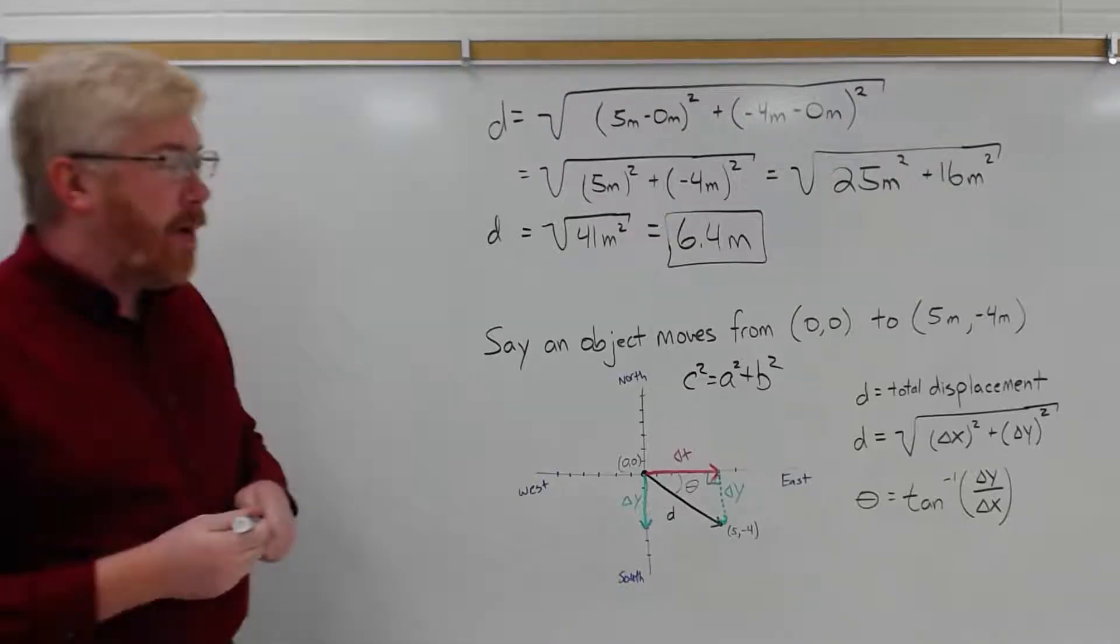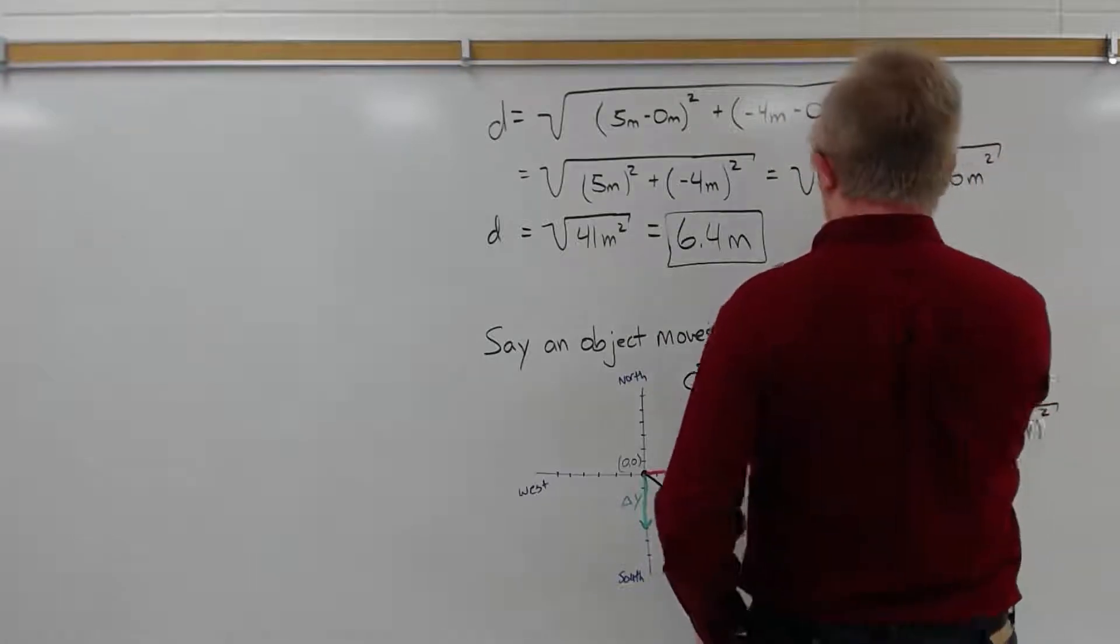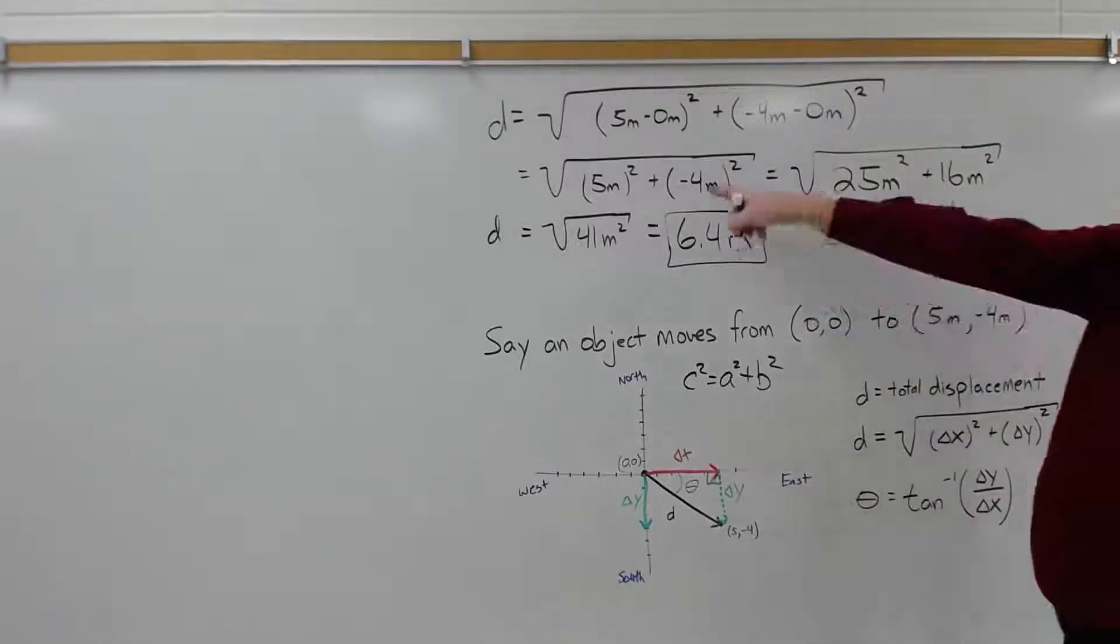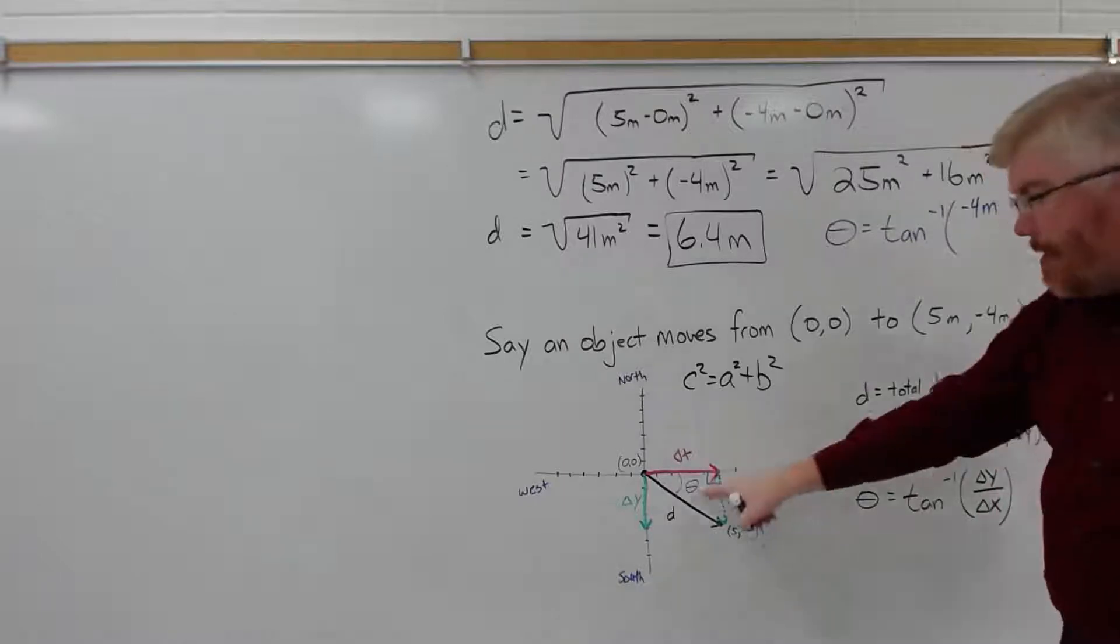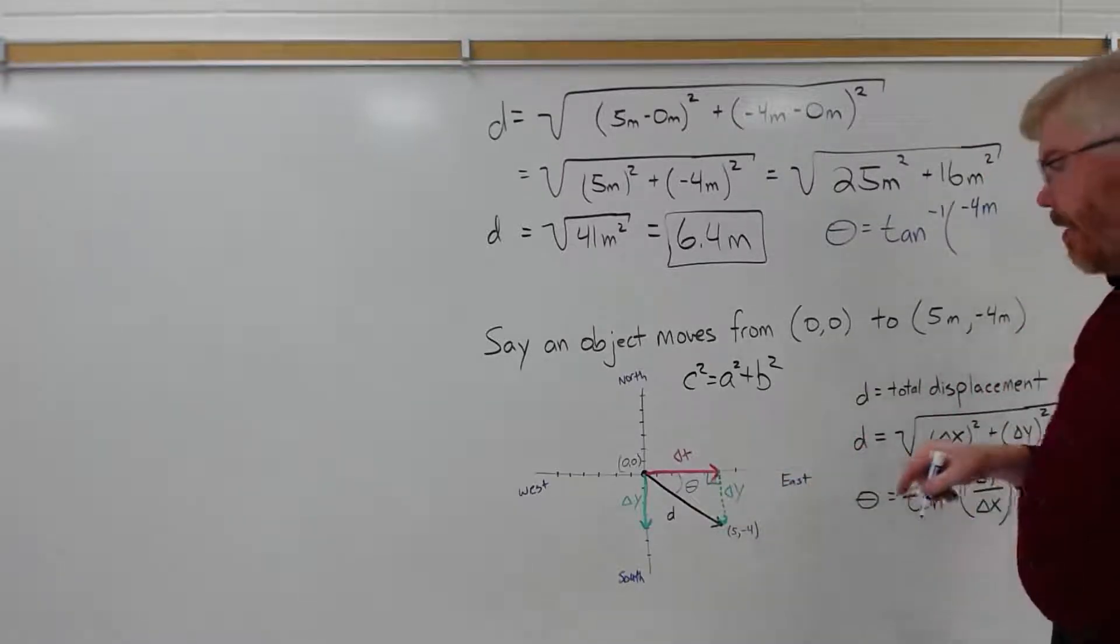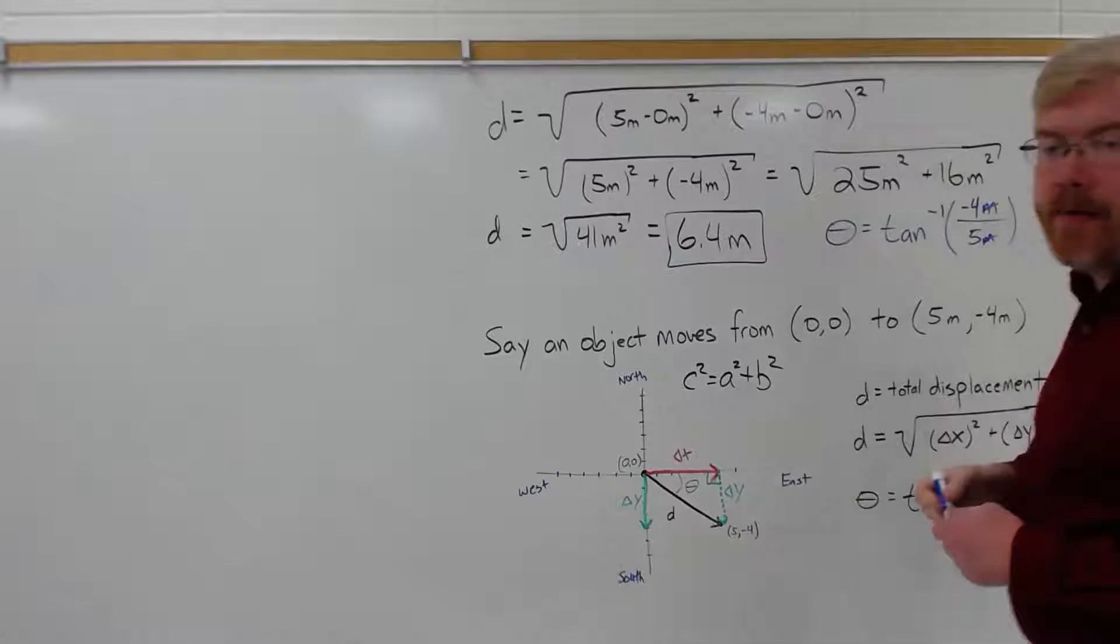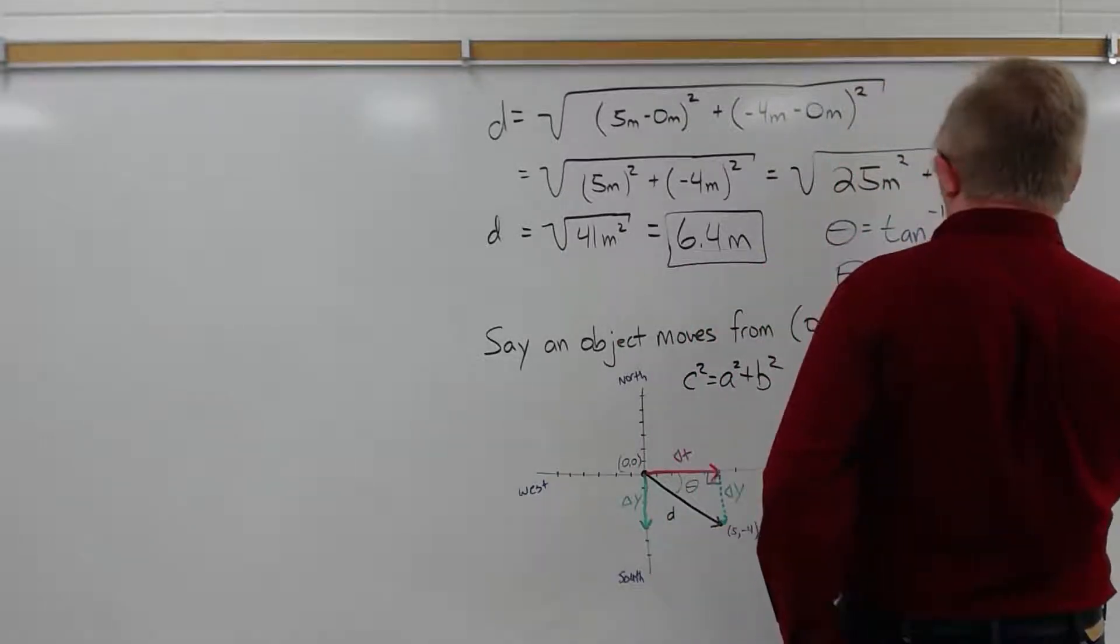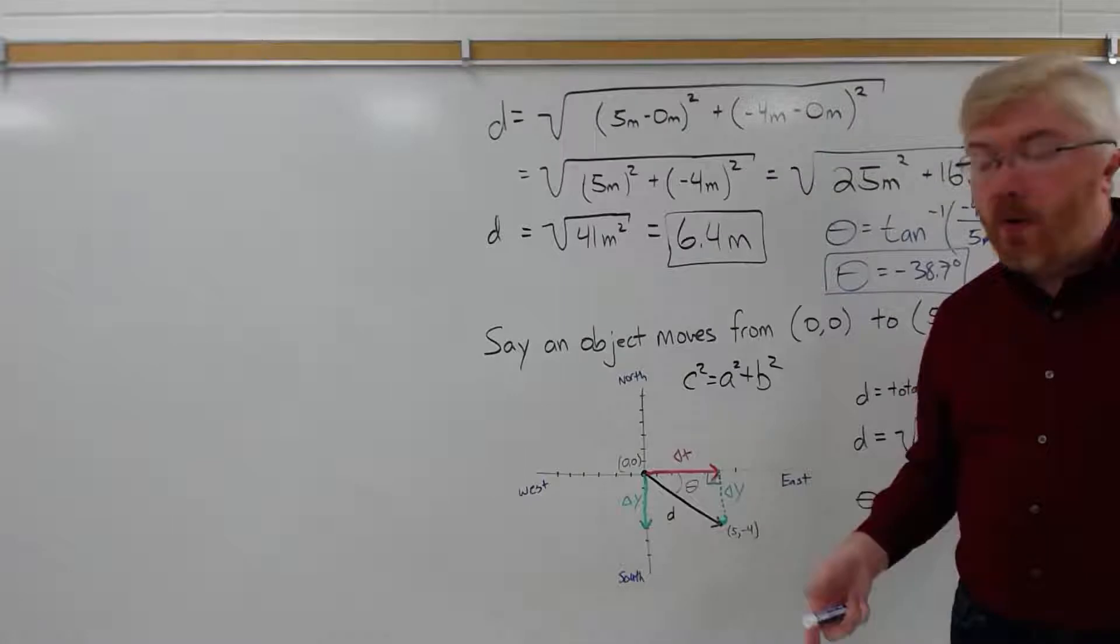Now plugging in for the angle, theta is the inverse tangent of delta y displacement over the x displacement. Well, the y displacement right here is minus 4. But, since I'm just interested in this angle, we can leave it as minus 4, that's fine. x, 5 meters. Meters will cancel. So it's the inverse tangent of negative 4 over 5. Plugging that in on your calculator, you get around minus 38.7 degrees.